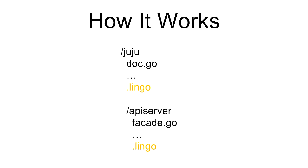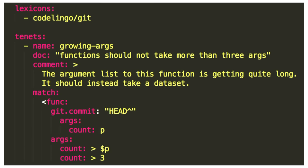How it works: it uses .lingo files in your repository. Inside .lingo, you just write a tenant — this is literally all you have to write. It's based on YAML, and there's a DSL where the grammar BNF file is maybe 50 lines — you can learn it in a day. It just works on node branches and leaf branches, writing a little pattern. Each element is a fact, and you write a statement of facts. The facts available to you depend on the lexicon you pull in.